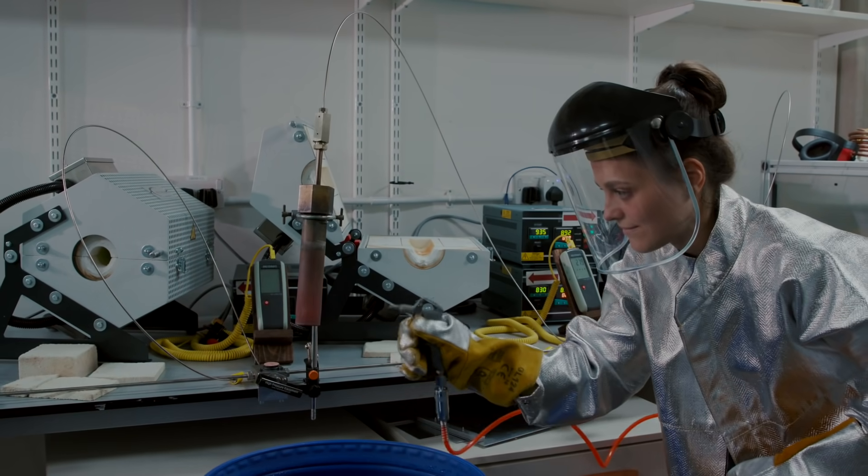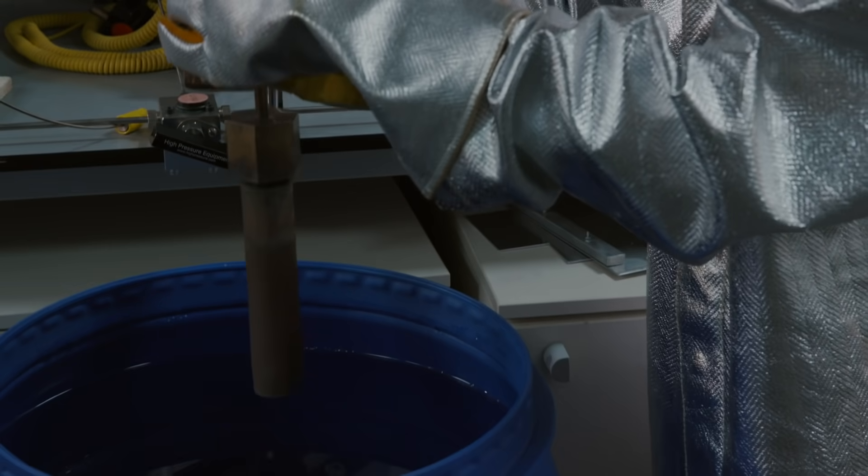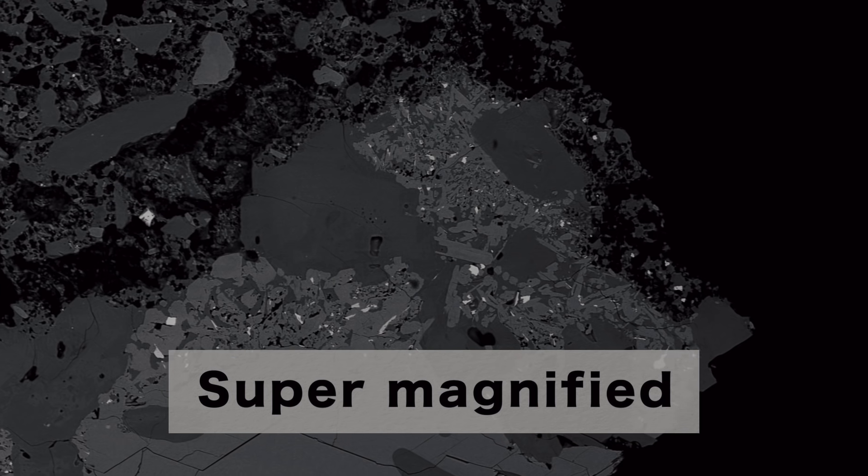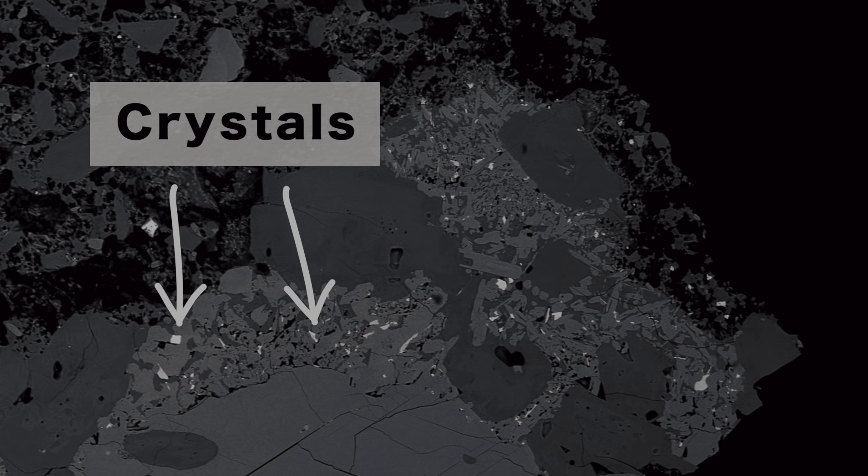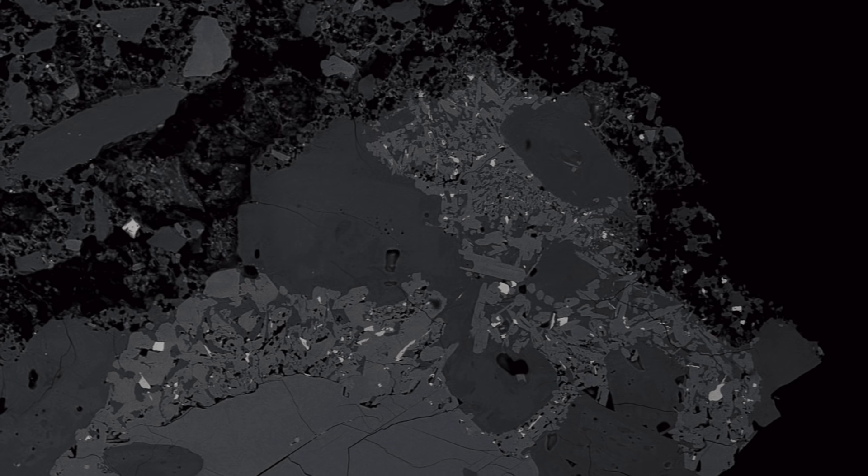Once my experiment is finished, I cool and depressurize the system and take out my rock. Now it's no longer a fine powder but a fragment of glass, bubbles and crystals. So now I can look at the shapes and numbers of the crystals and bubbles within this sample to tell me more about how the magma will move beneath the volcano.